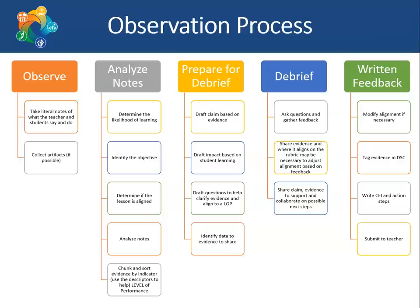Here is more detail on the observation process. First, the administrator observes the lesson, taking literal notes and collecting artifacts if possible. The administrator then analyzes their notes by determining the likelihood of learning in the lesson, identifying the lesson objective, determining if the lesson is aligned to the objective, analyzing their notes, and beginning to sort evidence by indicator. The administrator then prepares for the debrief with the teacher. They may draft their claim based on the evidence collected, draft the impact based on student learning, and identify any questions to help them clarify evidence and align to a level of performance.